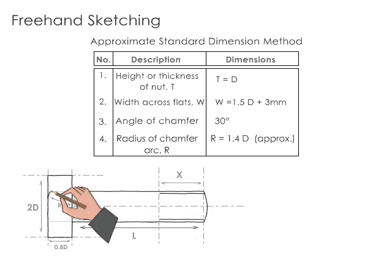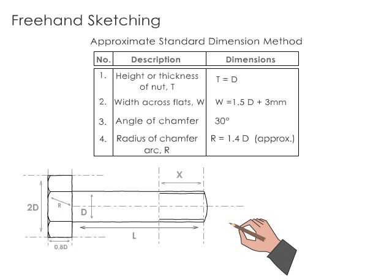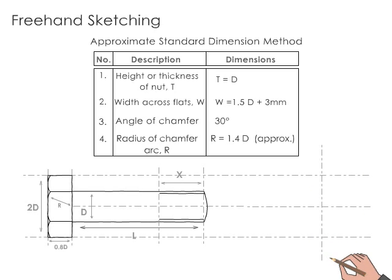Draw the arcs with radius R is equal to 1.4T to represent the chamfer shape of the bolt. The angle of the chamfer given is 30 degrees. Now, let's sketch the side view of the hexagonal head. Extend the center line from the front view at the right side. Draw two parallel projectors from the front view which represents the thickness of the bolt.